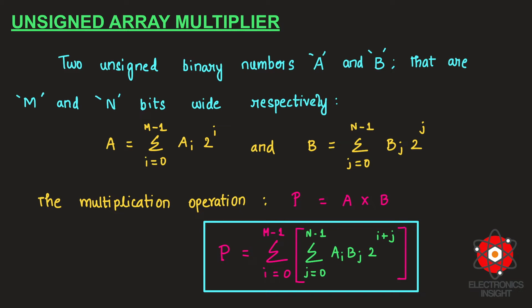Consider two unsigned binary numbers A and B, which are m and n bits wide respectively. A is defined as the summation from i=0 to m−1 of a_i × 2^i, and B is defined as the summation from j=0 to n−1 of b_j × 2^j. Multiplication is simply the product of these two unsigned binary numbers.